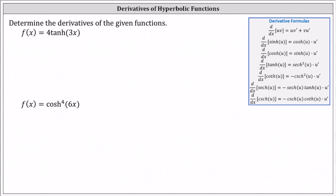Notice we do have a composite function, and therefore we do have to apply the chain rule. Looking at the formulas on the right, which include the chain rule, we have the derivative of hyperbolic tangent u with respect to x equals the square of hyperbolic secant u times u prime. In our case, u is equal to three x, which indicates u prime, or du/dx, equals three.